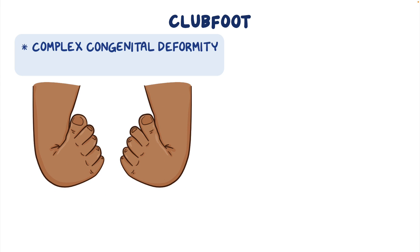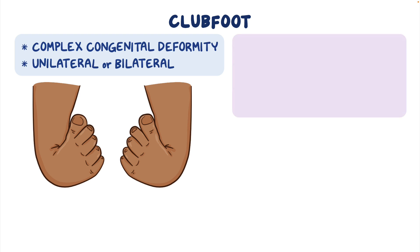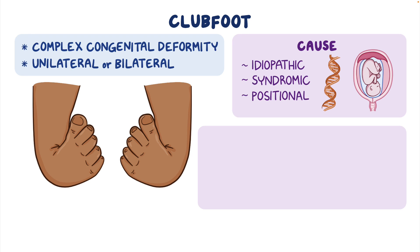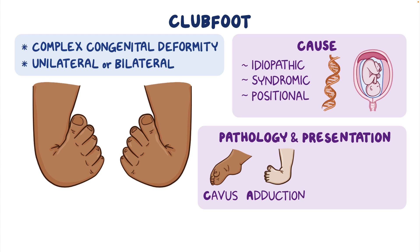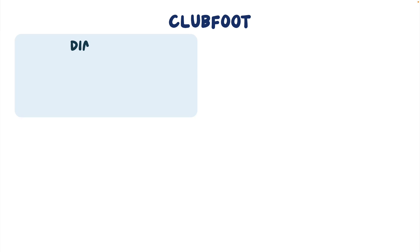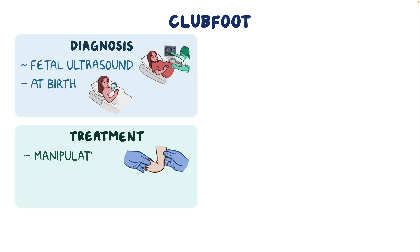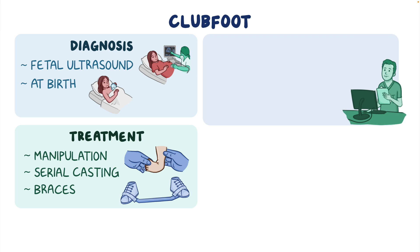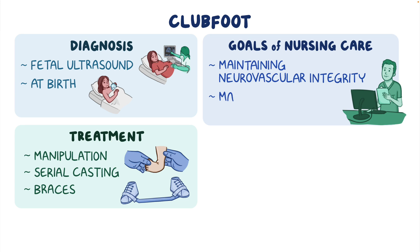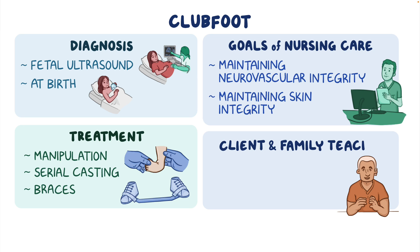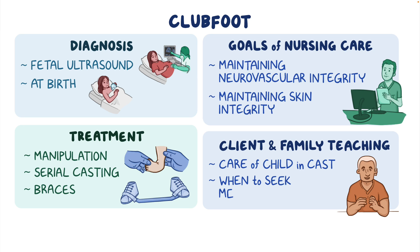As a quick recap: clubfoot is a complex congenital deformity of the ankle and foot, which can be unilateral or bilateral. The ultimate cause isn't fully known, but causes can be classified as idiopathic, syndromic, or positional. The pathology and presentation can be remembered by the acronym CAVE: cavus, adduction with supination, varus, and talipes equinus. Diagnosis can occur prenatally by fetal ultrasound or is made at birth. Treatment includes manipulation with serial casting and use of braces. Goals of nursing care include maintaining neurovascular integrity and skin integrity. Client and family teaching emphasizes care of the child in a cast and when to seek medical care.